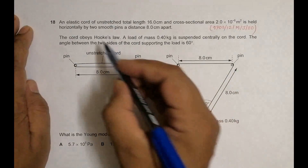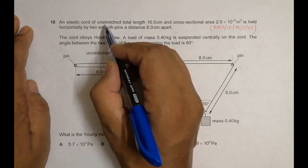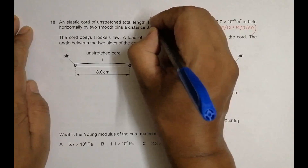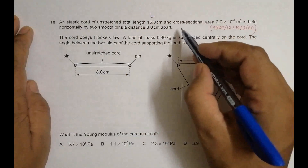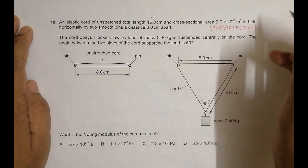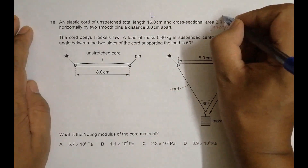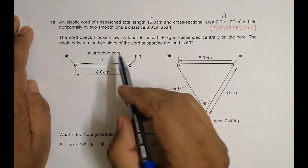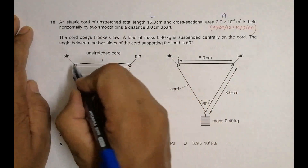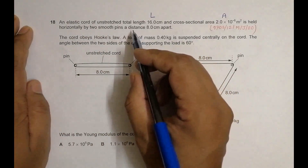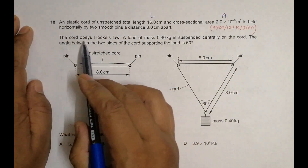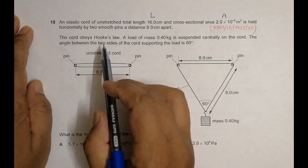It says that an elastic cord of unstretched length 16 centimeters — this is the original length L — and cross sectional area 2.0 × 10⁻⁶ m², equal to A. It is held horizontally by two smooth pins, meaning no friction, a distance of 8 cm apart.